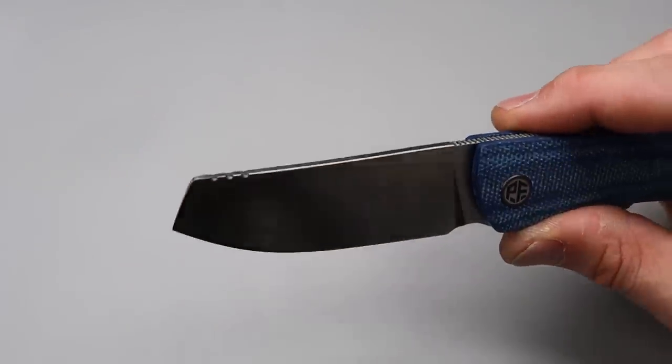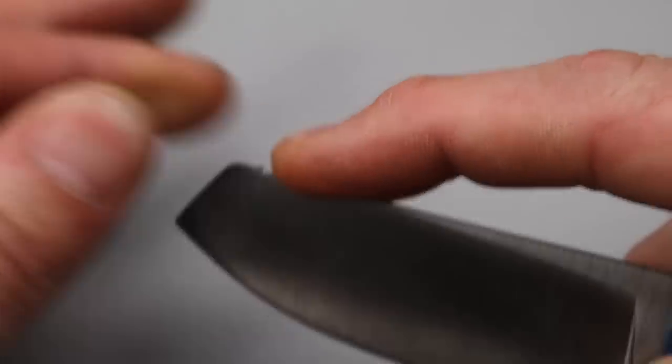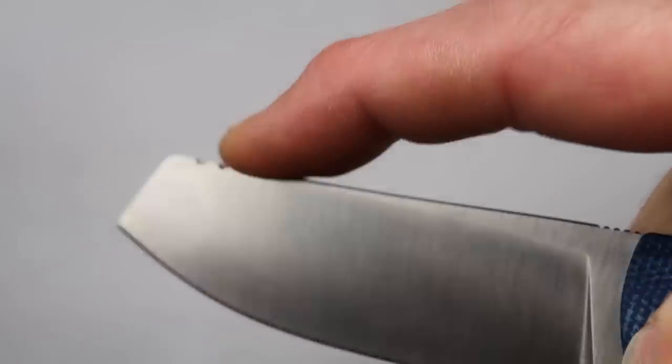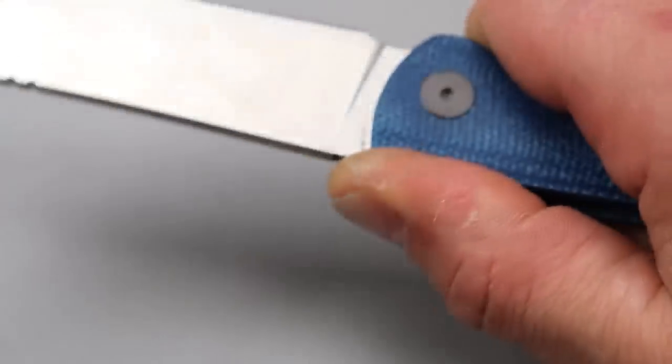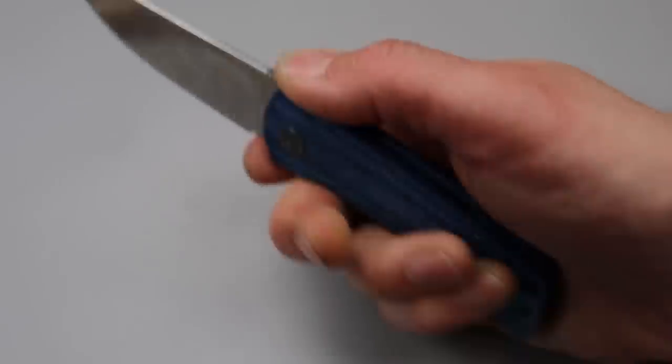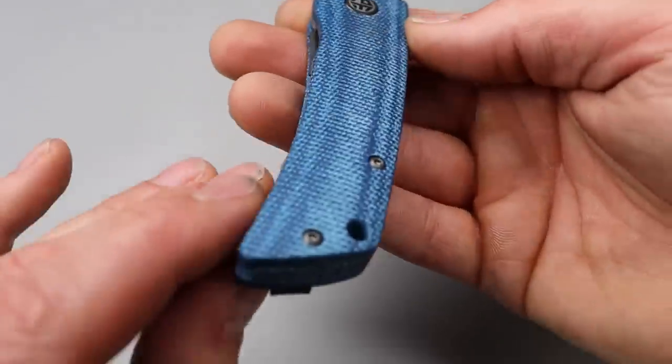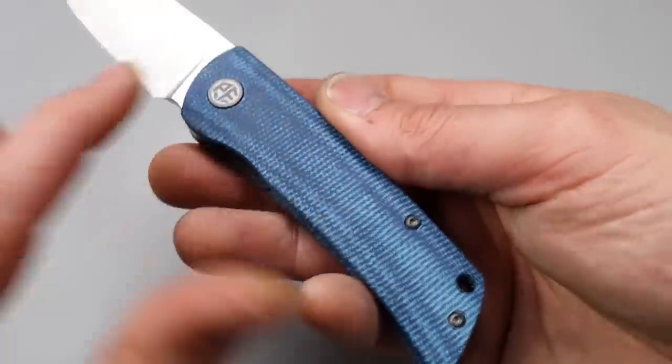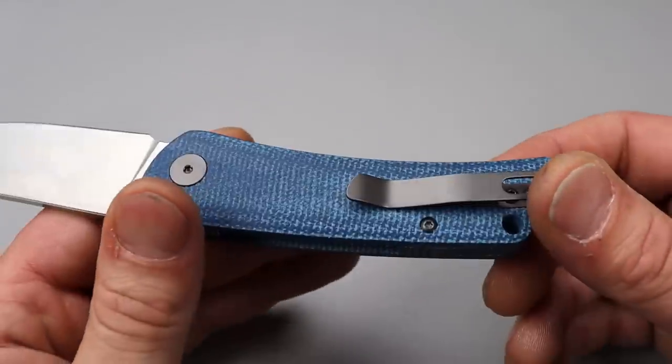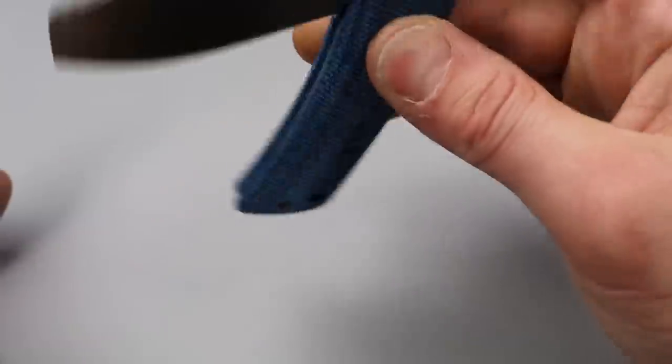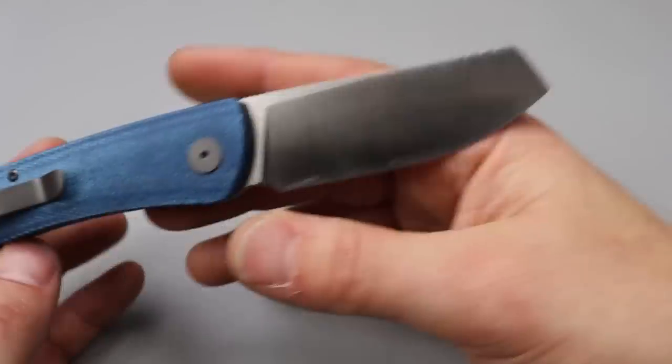It's interesting these little jimpings they put up here at the spine. I'm not sure if there's really a purpose. It doesn't really offer any traction or anything. So this jimping back here does give you a little bit of traction though for these pinch grips. Like I said, they did give you a little bit of jimping in the micarta. This micarta is going to wind up getting really dark eventually. But very cool, man. I'm happy with it.